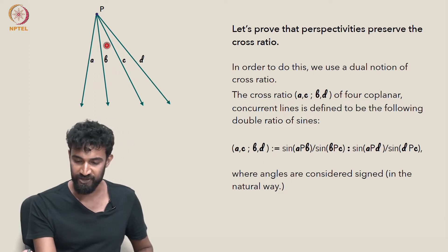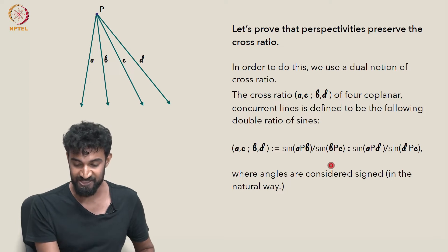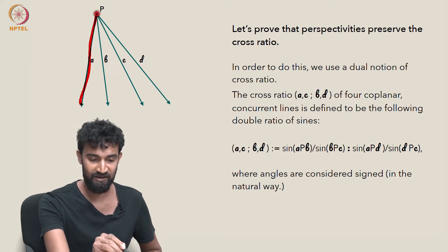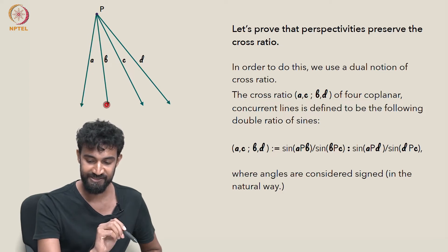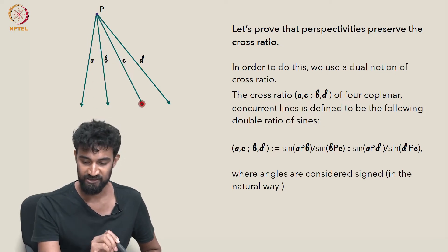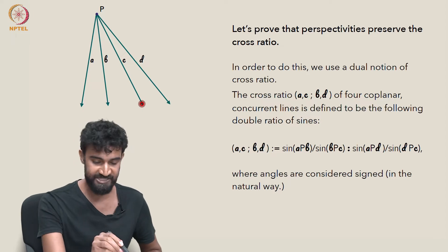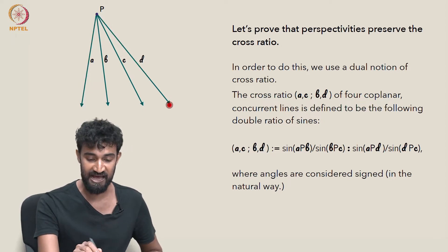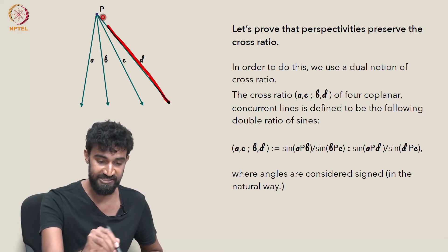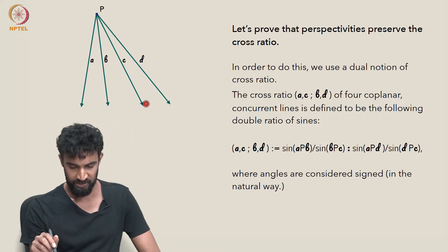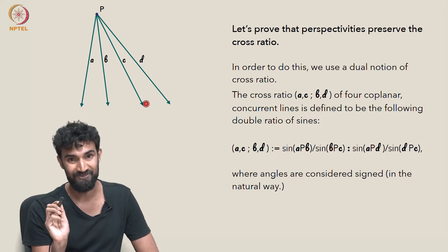The cross-ratio of lines is defined as follows: the sine of APB divided by the sine of BPC, all over the sine of APD divided by the sine of DPC — where DPC is that negative angle. That's the cross-ratio of lines.